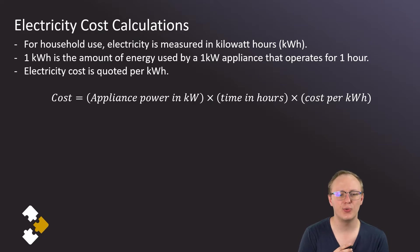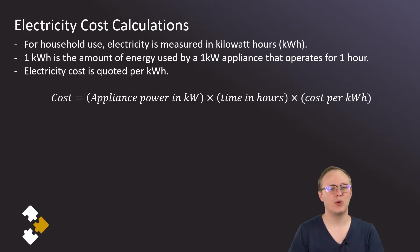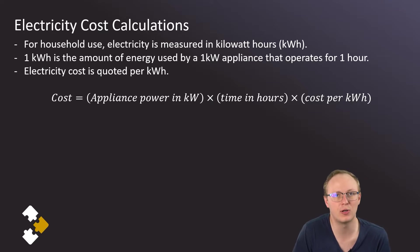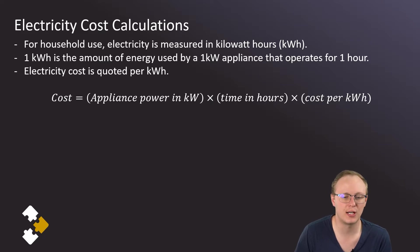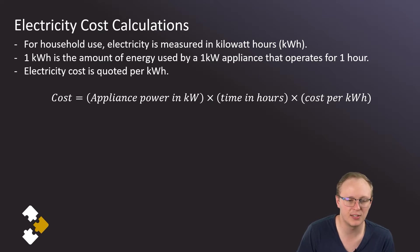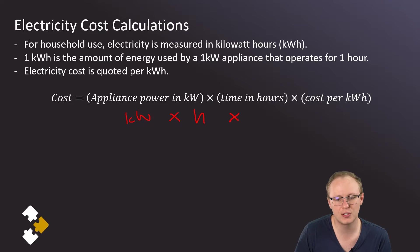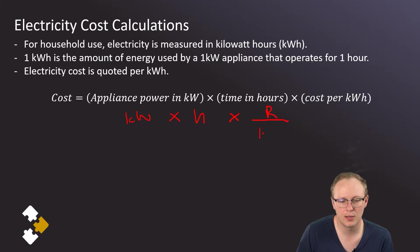So how do we find the cost? The cost is found by taking the appliance power in kilowatts, times the time in hours, times the cost per kilowatt hour. The appliance rating in kilowatts multiplied by time in hours, then multiplied by the cost per kilowatt hour.